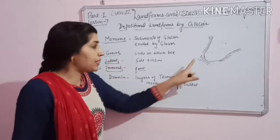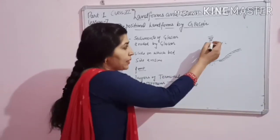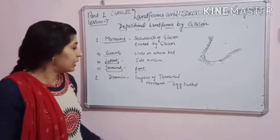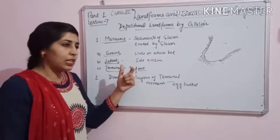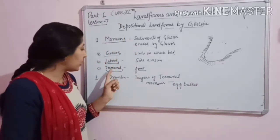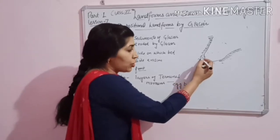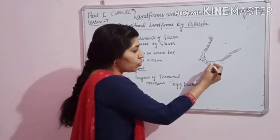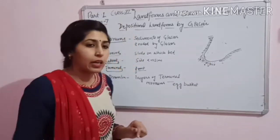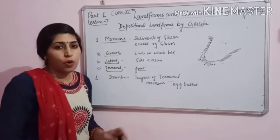Lateral moraines: the sediments that are accumulating on the sides of the glacier are called lateral moraines. And terminal moraines: the sediments that are accumulating and depositing in front of the glacier are called terminal moraines.